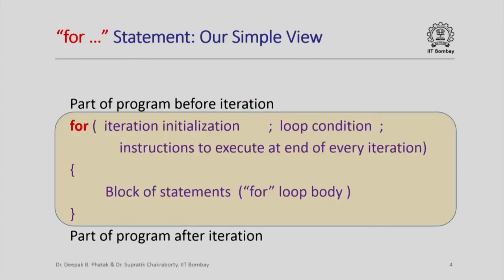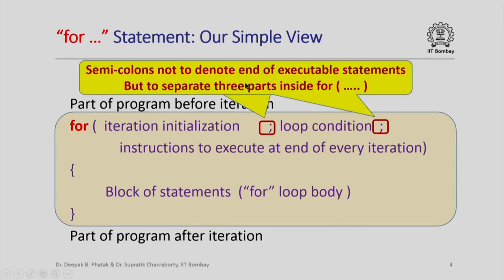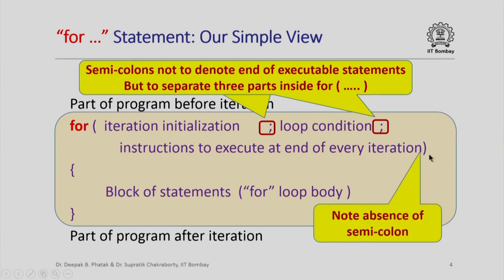Recall from the earlier lecture that a for loop in C++ looks something like this. There is a part of the program before the iteration and a part after the for loop. In between is your for loop, where you use the keyword for, followed by iteration initialization, loop condition, and instructions to execute at the end of every iteration. We use semicolons to separate these three parts — these semicolons do not denote end of executable statements, they are just separating the three parts. So we do not have a semicolon at the end of the last part, which contains the instructions to be executed at the end of every iteration.